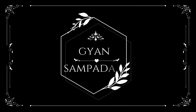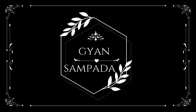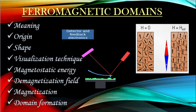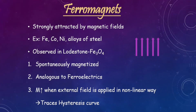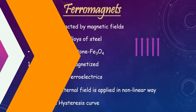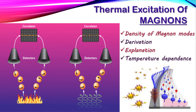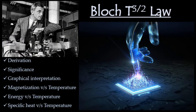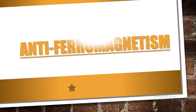Hello everyone and welcome back to my channel Gyan Sampata. From previous classes we have been dealing with condensed matter physics, discussing ferromagnetism. We understood many details about ferromagnetic materials and reached till Bloch's T^(3/2) law in our previous class. From today's class we are going to start with another concept related to ferromagnetism, which is antiferromagnetism.